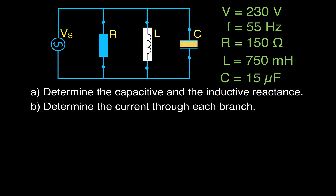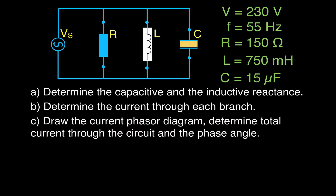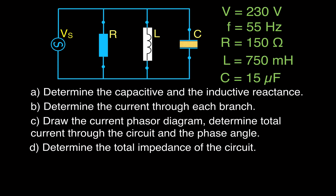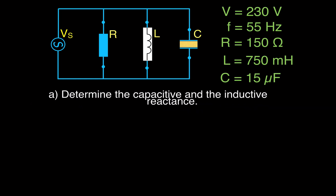We're going to do all the following things: get the inductive and capacitive reactance, determine the currents of each branch, get the phasor diagram and the phase angle, get the total impedance, get the admittance triangle, and again get the phase angle that way also. So let's get started.